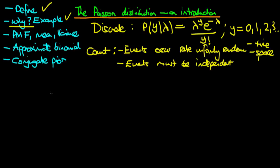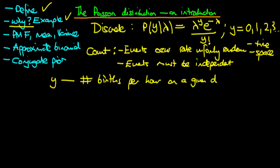An example might be whereby y measures the number of births per hour on a given day in a particular hospital. We might imagine that the event of an individual giving birth occurs uniformly at random throughout the day — so events are uniformly at random through time. We assume the events are independent, and that is trivially true for births, because it's unlikely that one individual giving birth makes it more likely that another individual will give birth.